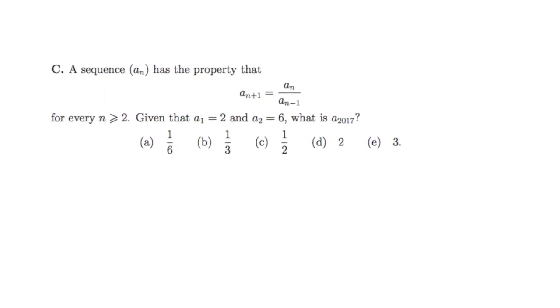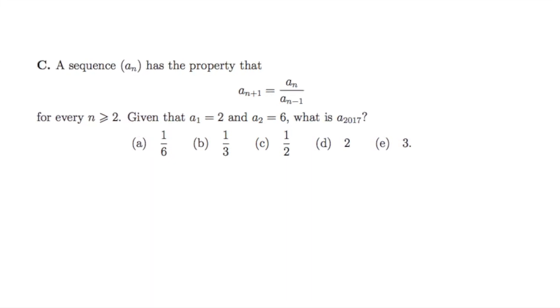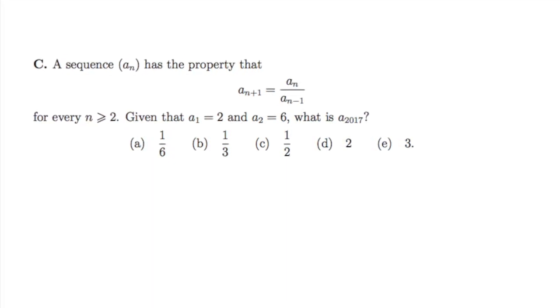We're also given the first two terms in the sequence, a_1 equals 2 and a_2 equals 6. We're asked to determine what the 2017th term in the sequence is, so let's give this a go.